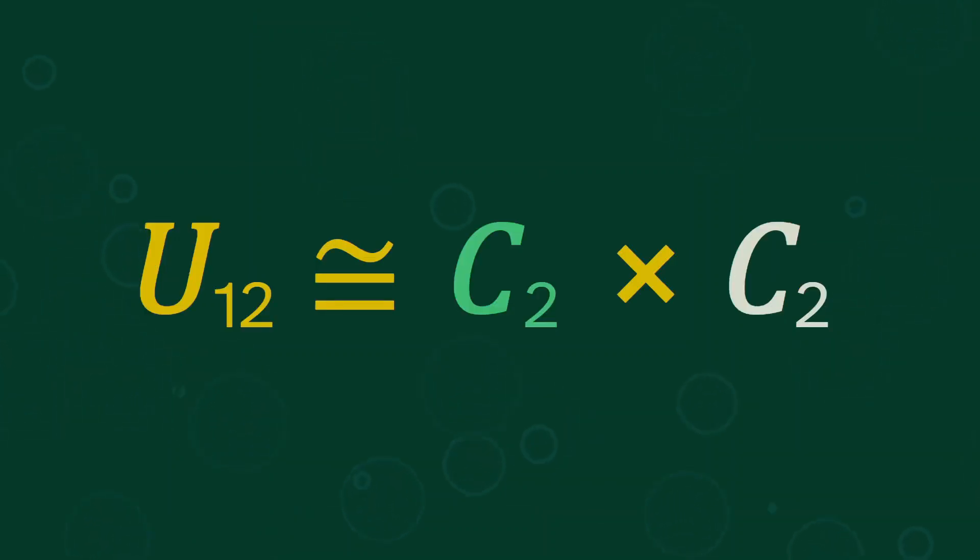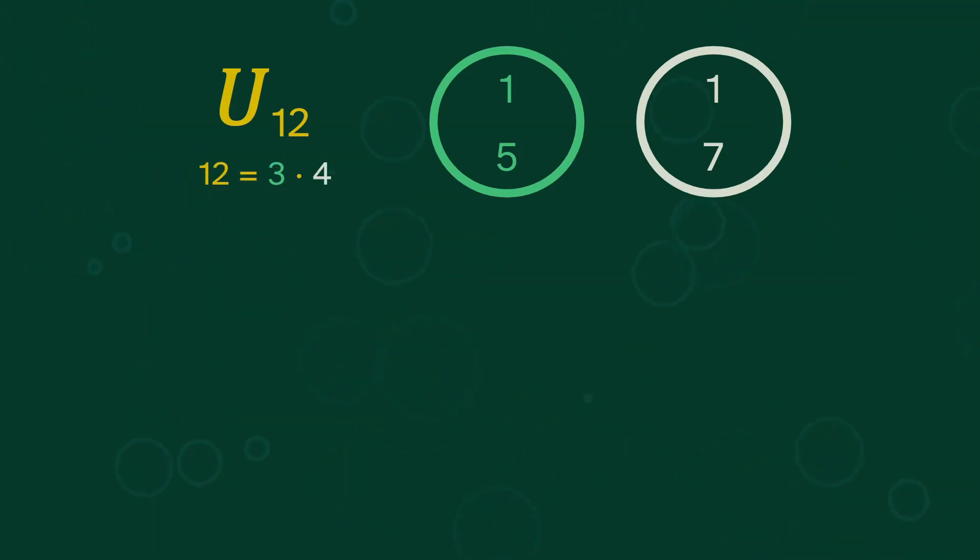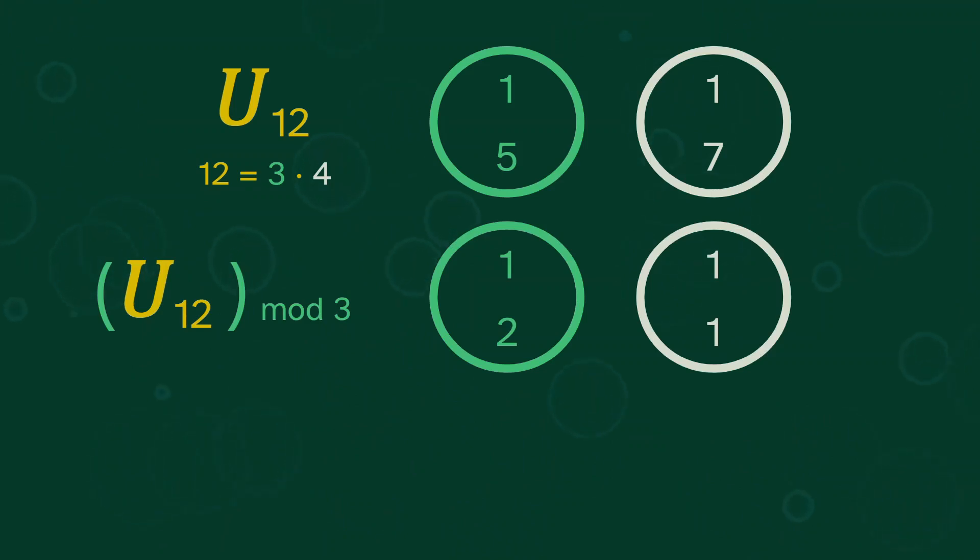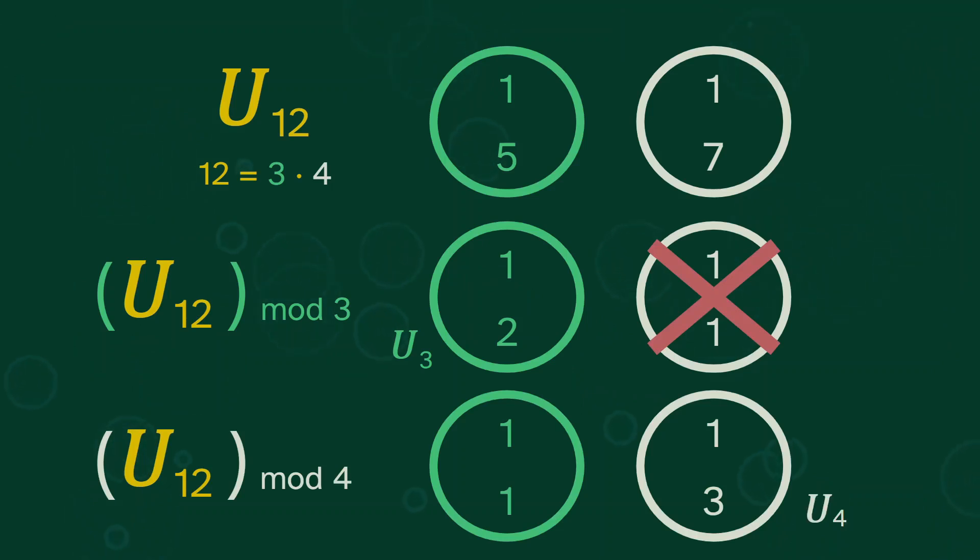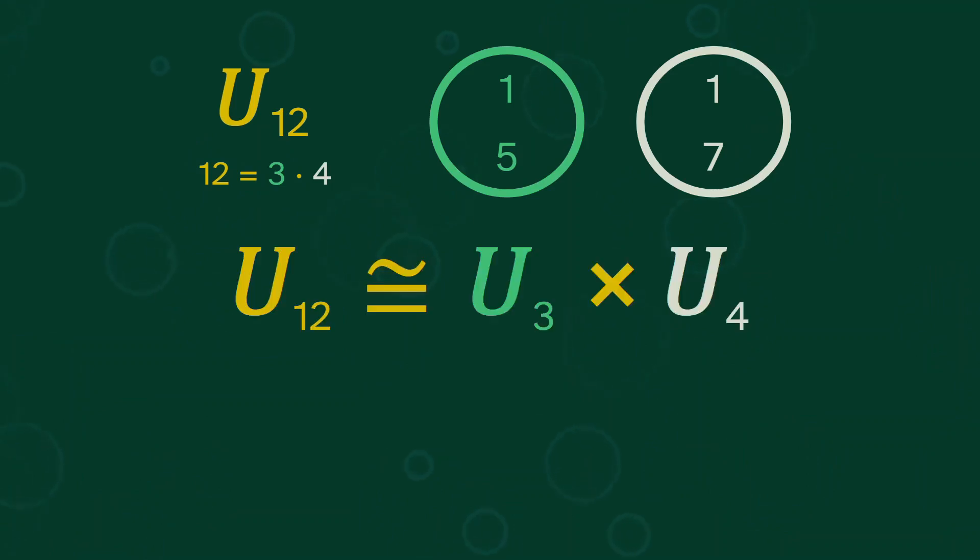So u12 is the product of 2 cycles. But why? Can we understand the reason a little better? Let's look at these clocks. And then we'll want to notice that 12 is 3 times 4. If we take u12 mod 3, reduce the clocks mod 3, we notice that the left clock is u3. This is the units mod 3. And then the right clock is redundant. It only has ones, so we can ignore that. Similarly, if we take u12 mod 4, the right clock is u4 and the left clock becomes redundant. And this gives us a much better way of thinking about this. u12 is the product of u3 and u4, where each is represented with its own clock. And u3 is isomorphic to a 2 cycle. u4 is also isomorphic to a 2 cycle. And that is why u12 is the product of two 2 cycles.